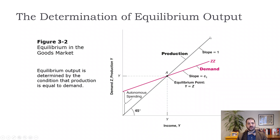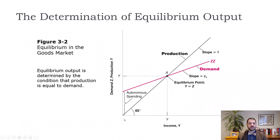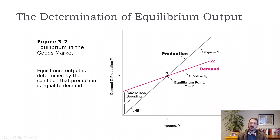We put demand and production on the vertical axis and income — which also equals production — on the horizontal axis. Our equilibrium condition is represented by a 45-degree line, which contains all points where income equals demand, so any of those points are potential equilibria. The slope of the demand function, like the consumption function, equals C1, which is less than one — important because the 45-degree line has slope exactly one. We draw the demand curve with vertical intercept equal to autonomous spending and slope less than one; it intersects the 45-degree line at exactly one point, point A — our equilibrium.